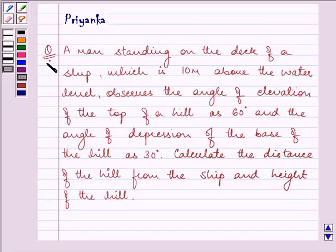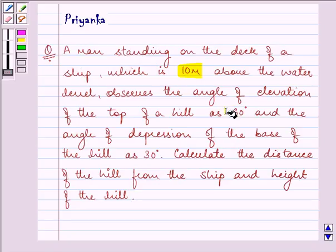Hello and how are you all today? The question to be discussed is: a man standing on the deck of a ship, which is 10 meters above the water level, observes the angle of elevation of the top of a hill as 60 degrees and the angle of depression of the base as 30 degrees. We need to calculate the distance of the hill from the ship and the height of the hill.